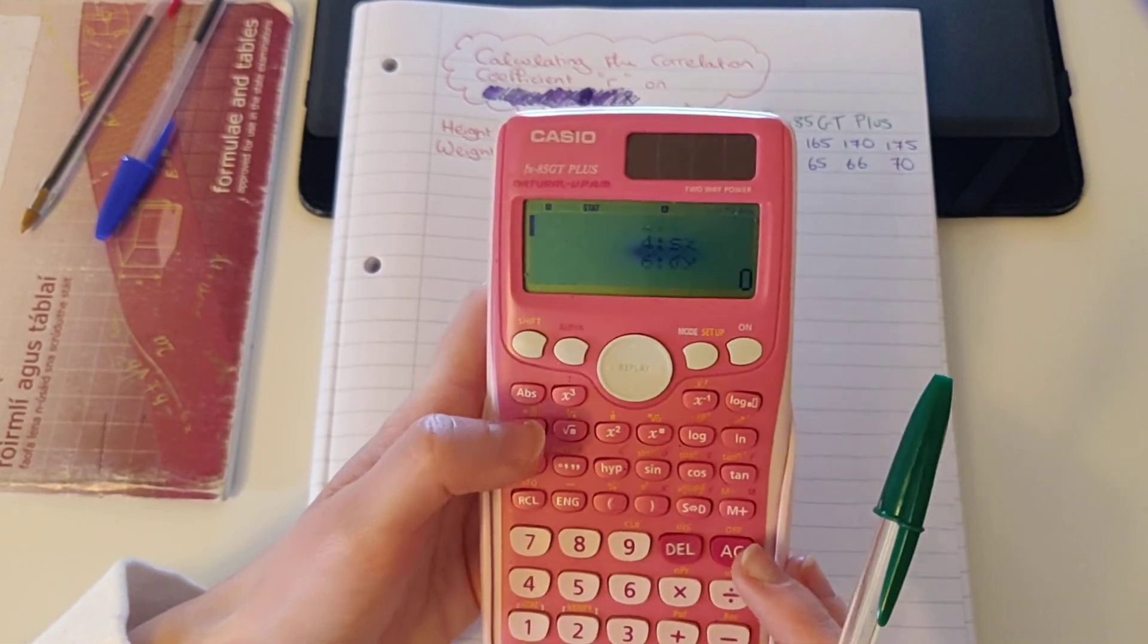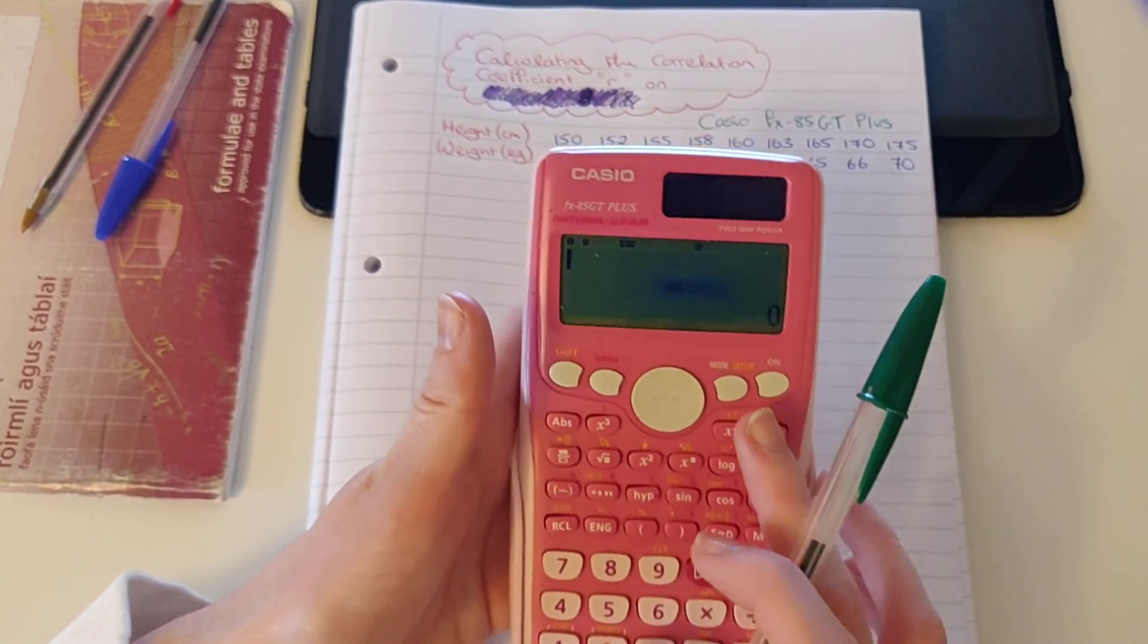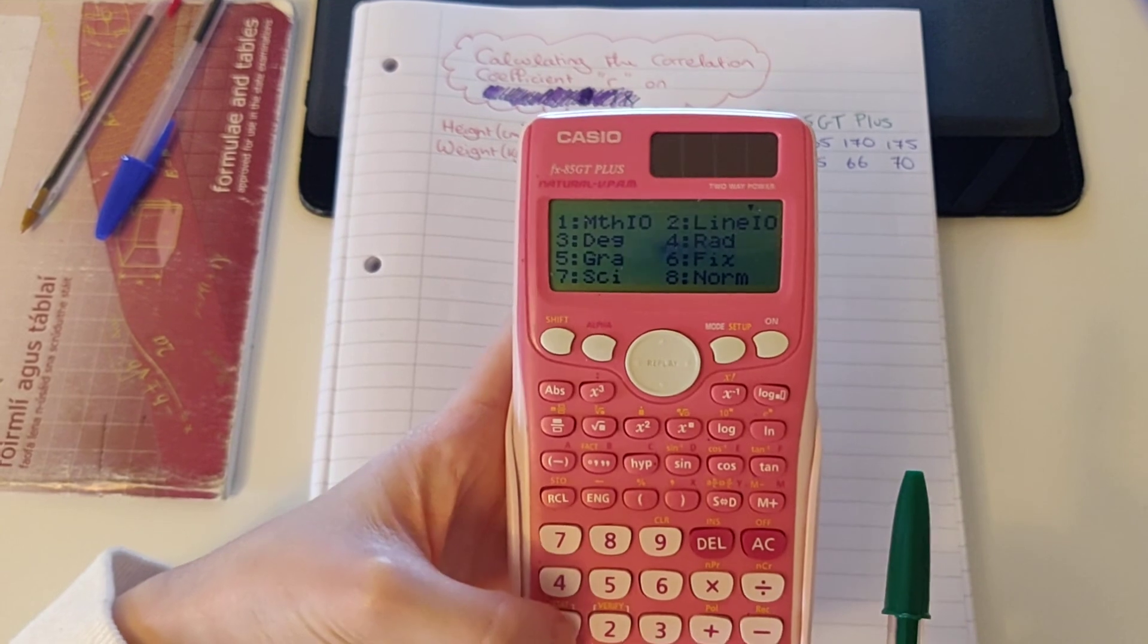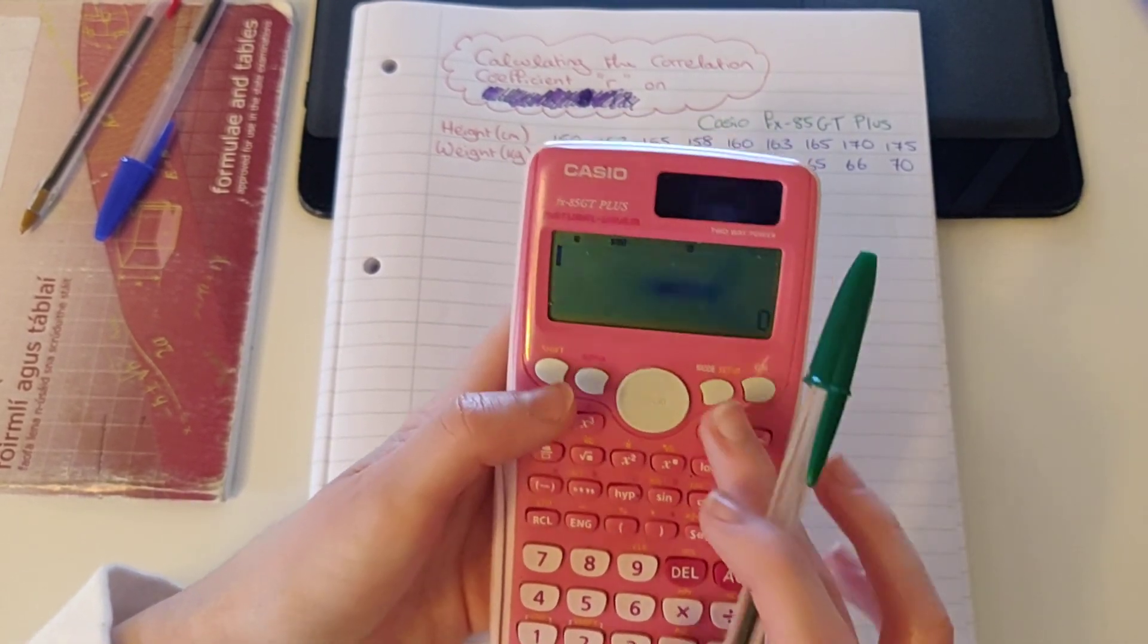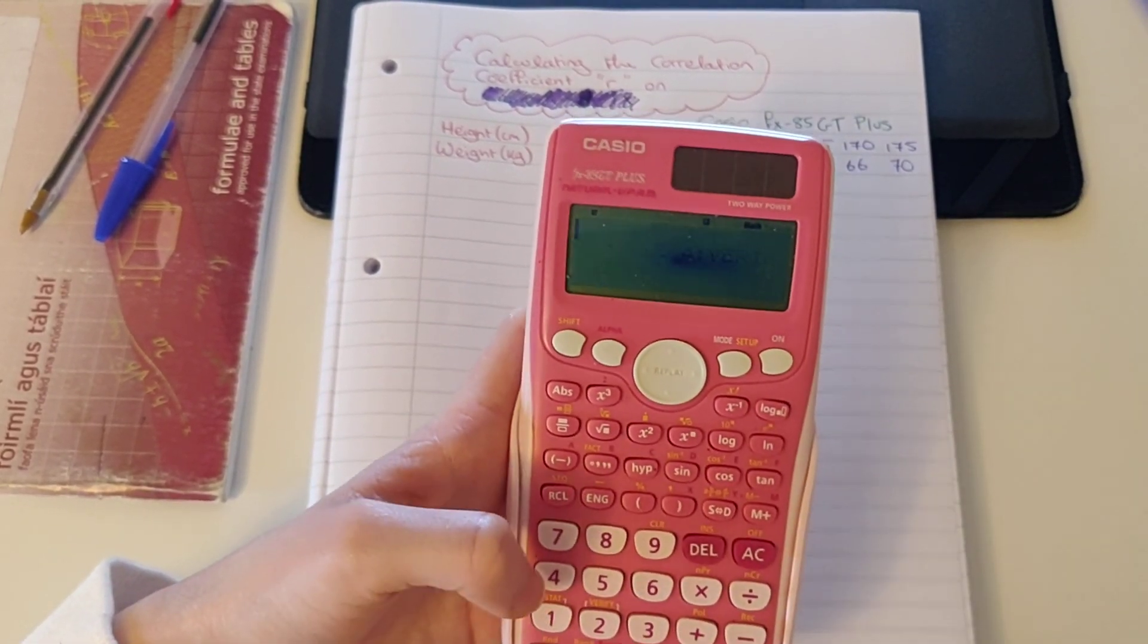OK, so now I'm going to press AC and to turn off my statistic mode, I'm going to press Shift, Mode and 1 to turn it off.